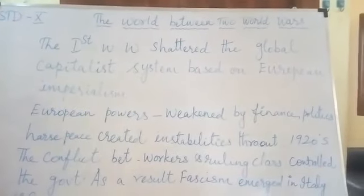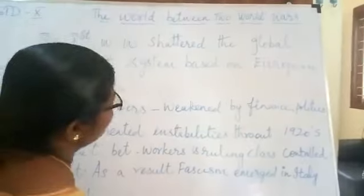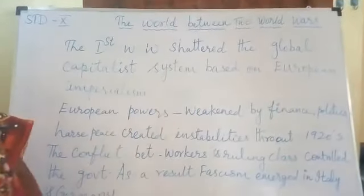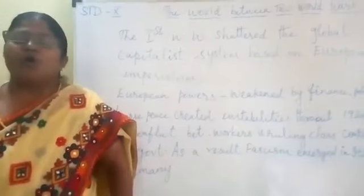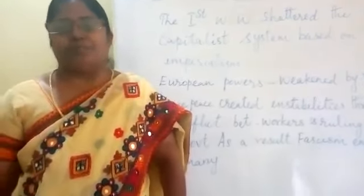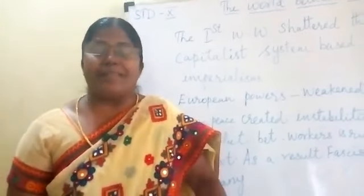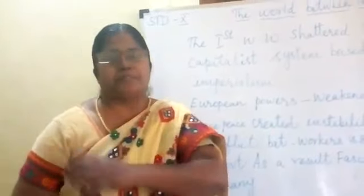The First World War shattered the global capitalist system based on European imperialism. The Europeans followed the policy of imperialism — that is, capturing countries and using them for their own various purposes. That is called European imperialism.